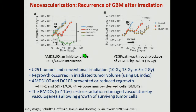ADM3100 is a compound that inhibits hypoxic-mediated signaling via SDF-1, CXCR4, and CXCR12. By adding ADM3100, you inhibit hypoxic signaling; by inhibiting hypoxic signaling, you prevent neovascularization; and by preventing the formation of new vessels, you prevent the tumor from regrowing. This study clearly showed a very beneficial effect of preventing neovascularization, which drives tumor recurrence.